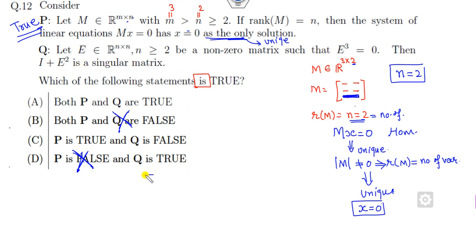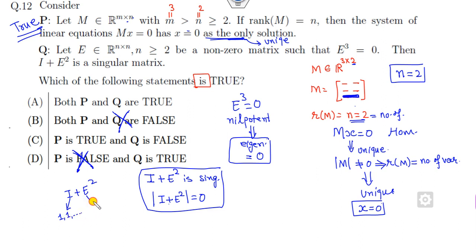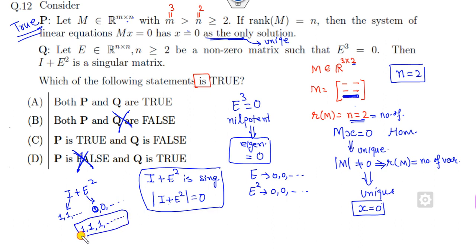Your target is to check whether I + E² is singular, meaning determinant of I + E² must be 0. What is given? E³ = 0, which is a nilpotent matrix. The eigenvalues of a nilpotent matrix are always 0. So the eigenvalue of E is 0, 0, 0; eigenvalue of E² is also 0, 0, 0. Therefore eigenvalue of I + E² is always 1, 1, 1. The determinant is always 1, which is non-zero. Hence I + E² is not singular — but the question asks about singular, so this statement is false. The correct answer is only C.